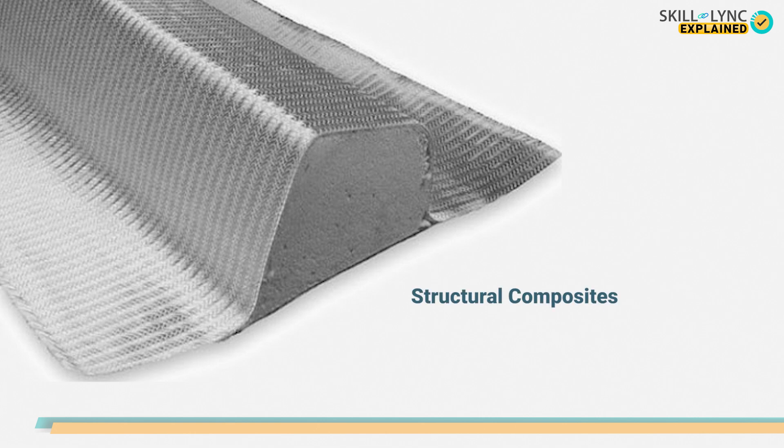Let's move on to the last type of composites, which is the structural composite. Structural composites are made of both homogeneous and composite materials. The properties of composite materials depend both on the material properties and the geometry of the composite.